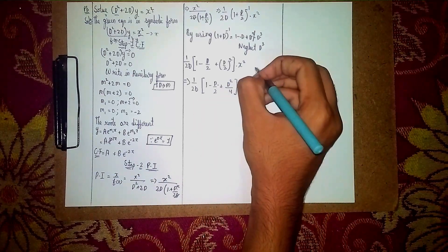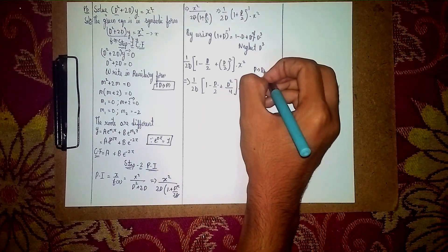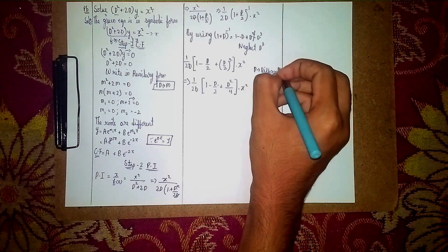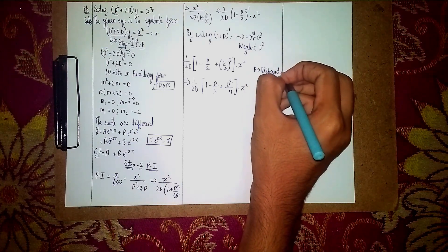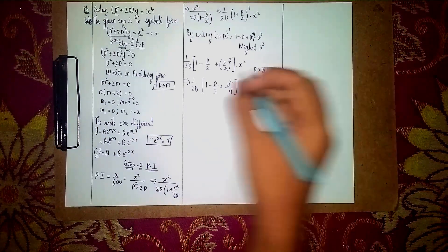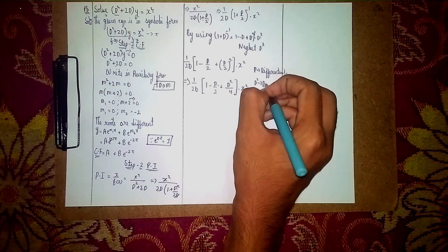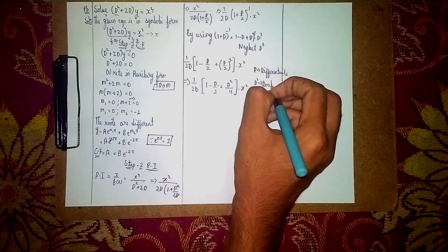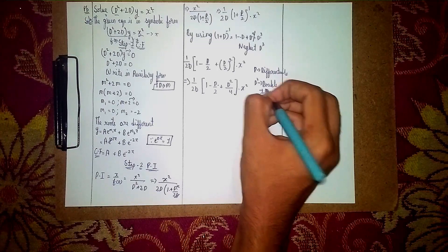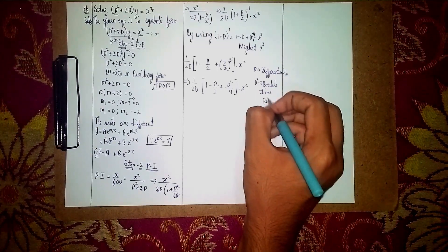Here D means differentiation (d/dx), and D² means differentiating twice. So D(x²) = 2x, and D²(x²) = 2.